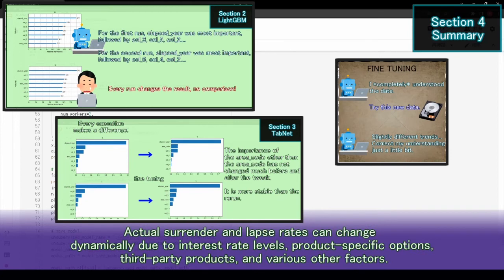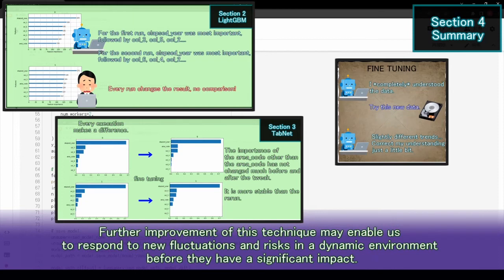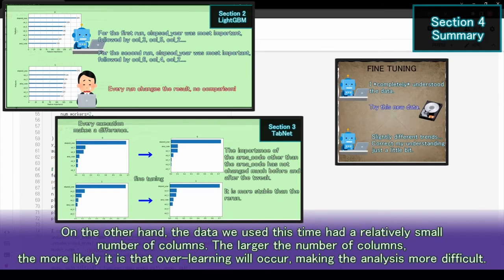Actual surrender and lapse rates can change dynamically due to interest rate levels, product-specific options, third-party products, and various other factors. Further improvement of this technique may enable us to respond to new fluctuations and risks in a dynamic environment before they have a significant impact. On the other hand, the data we used this time had a relatively small number of columns. The larger the number of columns, the more likely it is that double learning will occur, making the analysis more difficult.